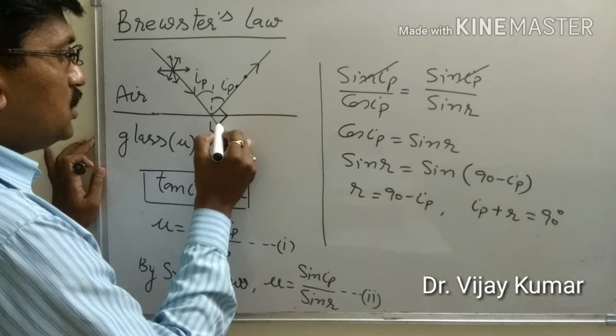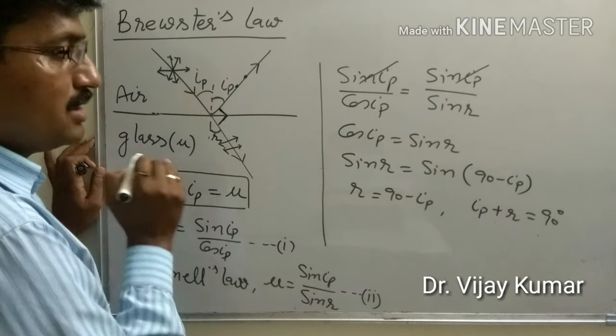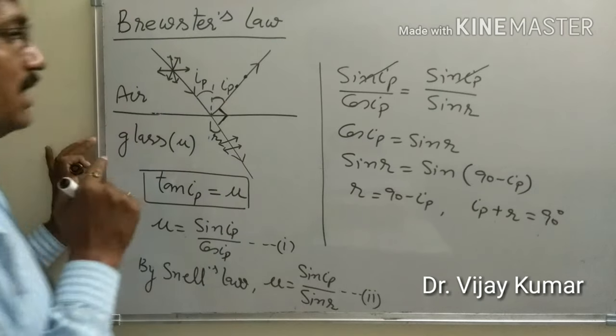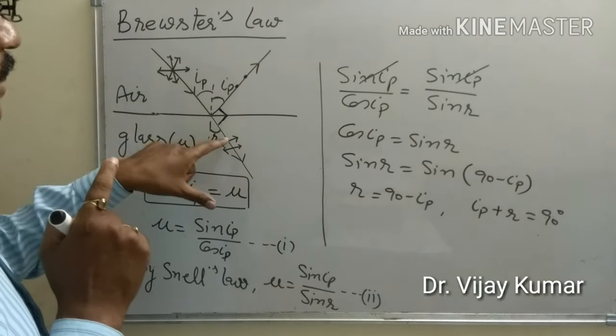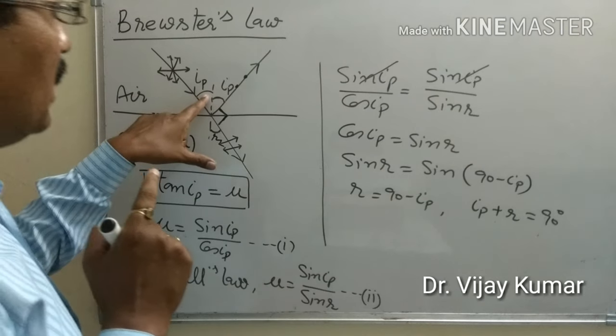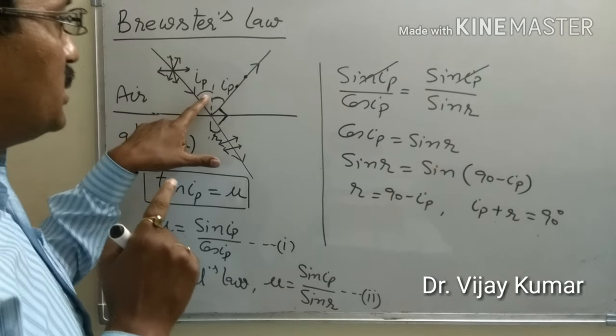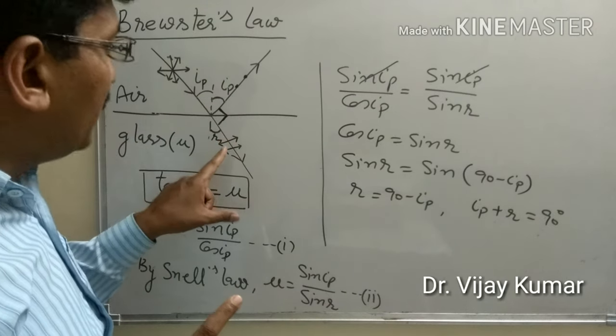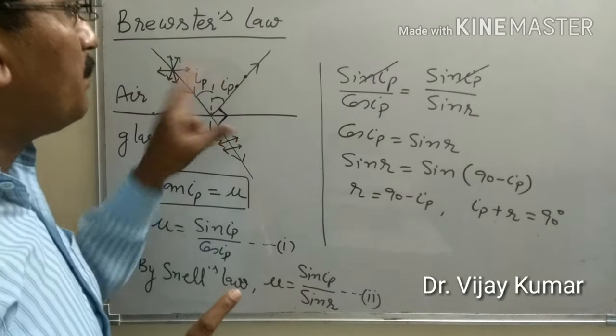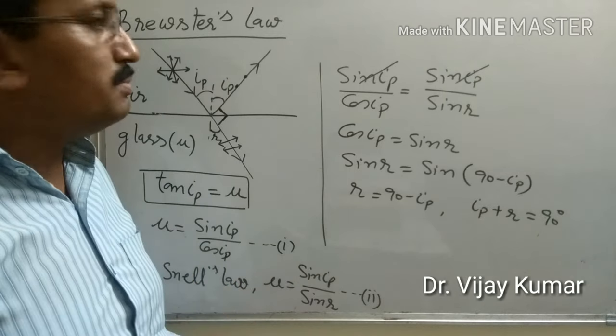It means these two rays are perpendicular, or we can say that at angle of polarization, if angle of incidence becomes equal to the angle of polarization, then reflected and refracted rays are perpendicular to each other. This is Brewster's law. Thank you.